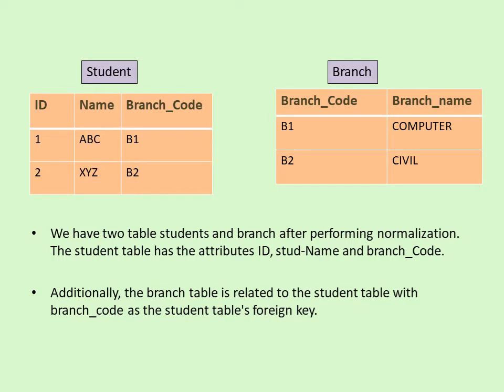There are two tables: a student table and a branch table. In the student table, id is a primary key and branch code is a foreign key. In the branch table, branch code is a primary key. After performing normalization, we divided one table into two tables.